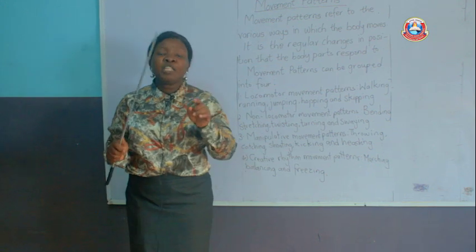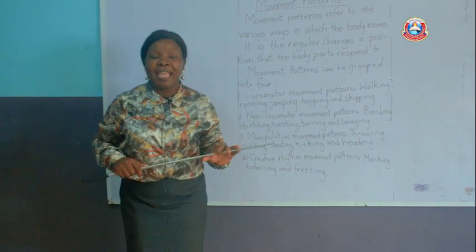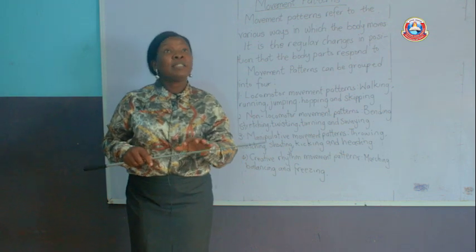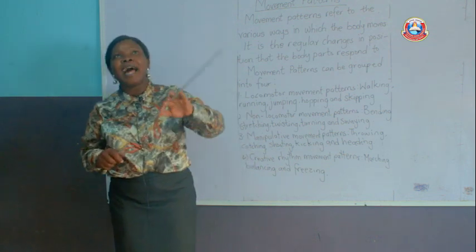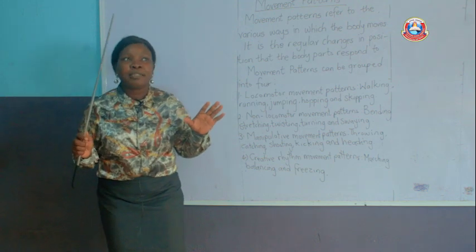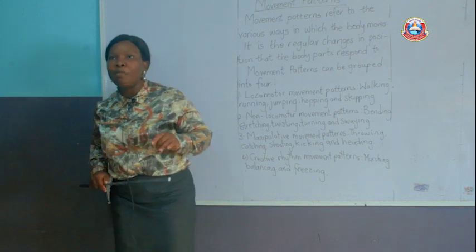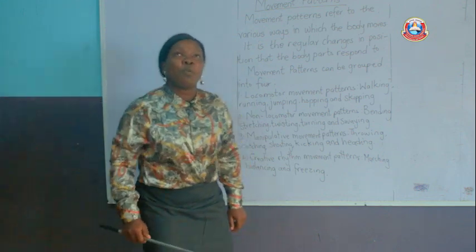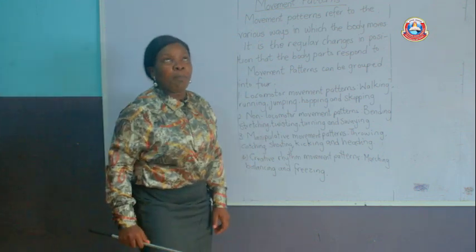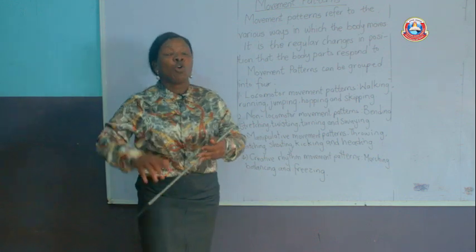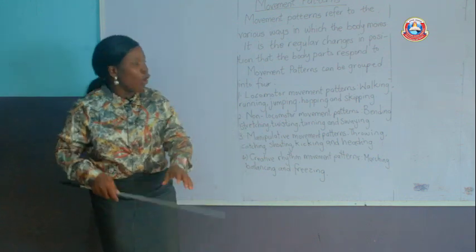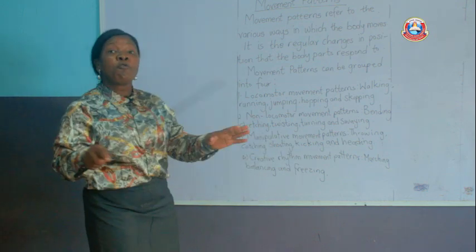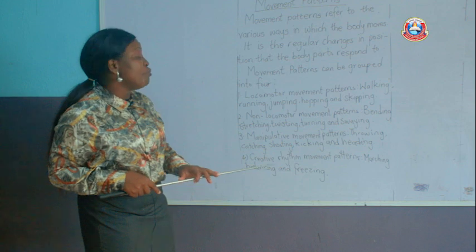Then we have heading. This skill is usually used in football. When you see that the ball is shot up to the sky and you can't reach it with your foot or your hand, you station yourself in a particular position and hit the ball with your head — controlling the ball with your head. All these different examples fall under the manipulative movement pattern.